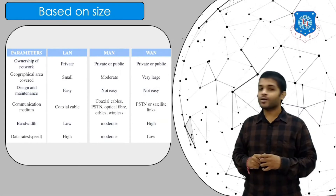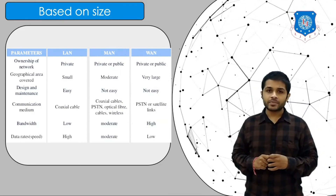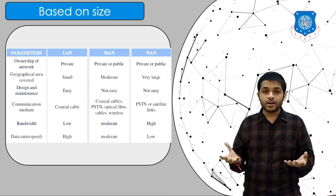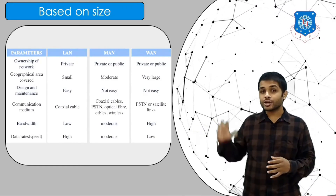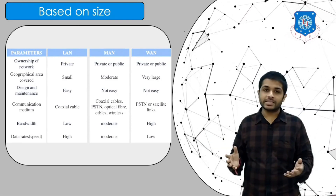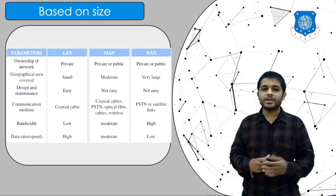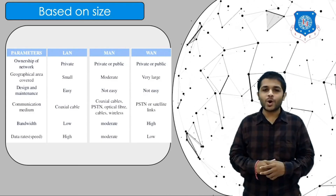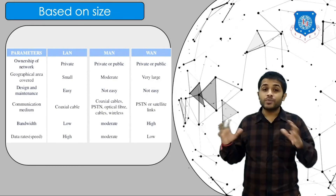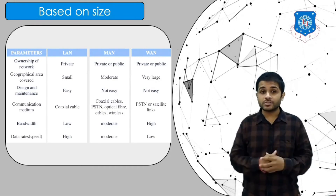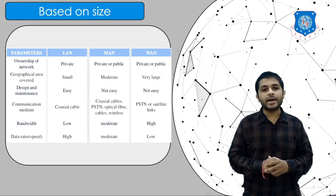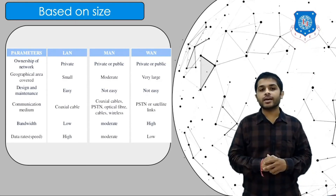The WAN is owned by public or private entities. The area covered by a Wide Area Network is very large because WAN includes more than one LAN and more than one MAN. Design and maintenance is not easy because the network spans within a country or between countries. The communication medium can be satellite or PSTN. The bandwidth is high and the data rates are low.